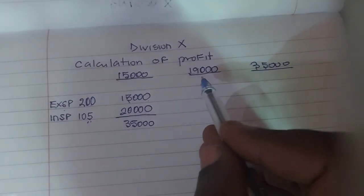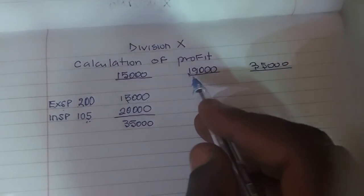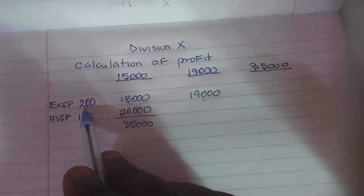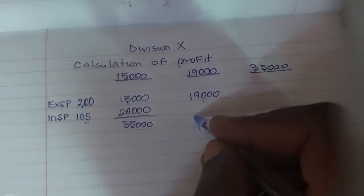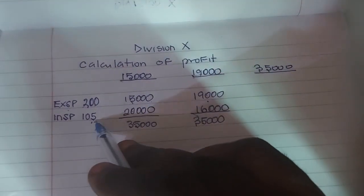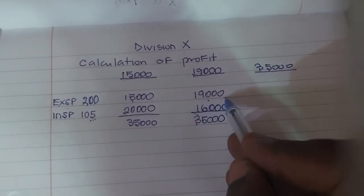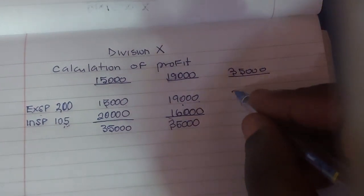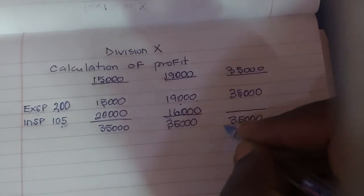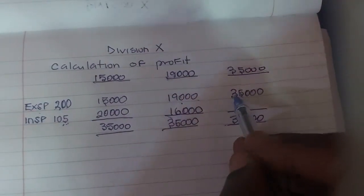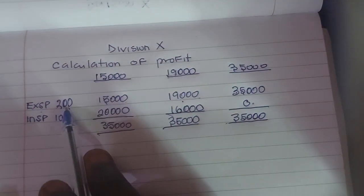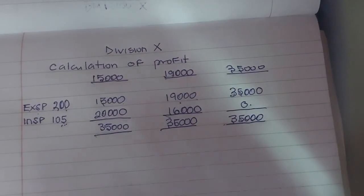Suppose the external demand is 19,000 units. That 19,000 will be quoted at the external selling price of 200. The balance of 16,000 — because the capacity is 35,000 — will be quoted at the variable cost, because there is no external demand for it. We only have 19,000 units as external demand. Then, if the external demand is 35,000, that is the same as the capacity, and all 35,000 must be quoted at the external price of 200. There will be zero units for internal transfer.